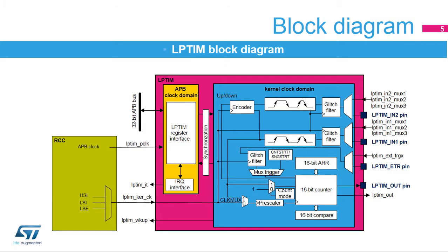The low-power timer is a peripheral with two clock domains. The APB clock domain contains the peripheral's APB interface. The kernel clock domain contains the low-power timer peripheral's core functions, and can be clocked by internal clock sources or from an external clock source through the timer's LP-TIM-IN1 input.